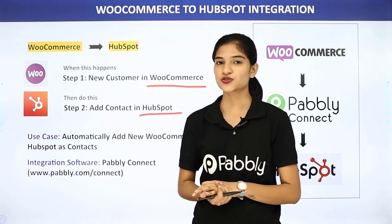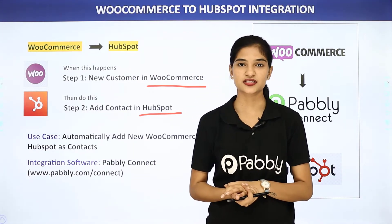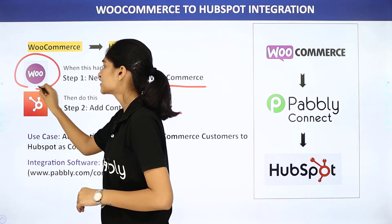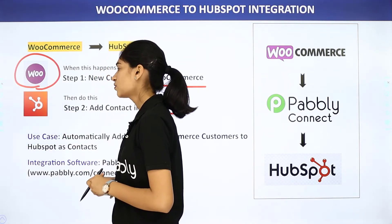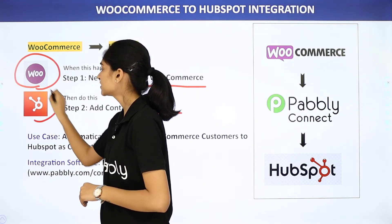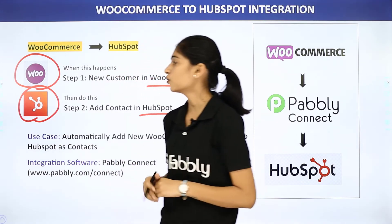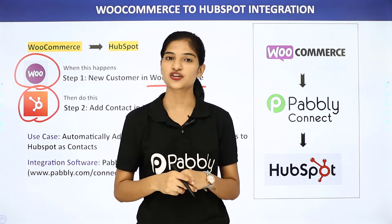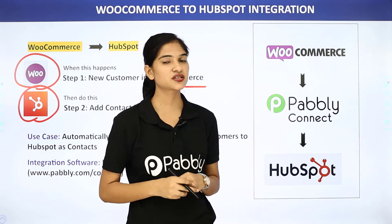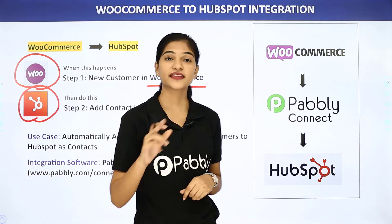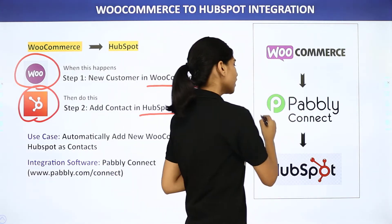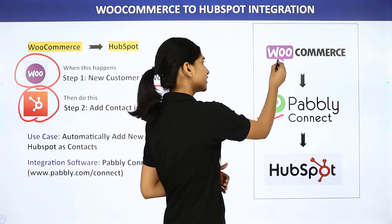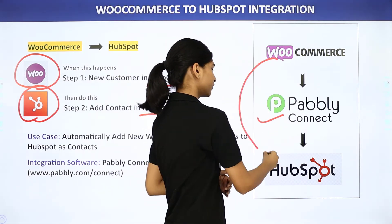First, let us know what these two software applications are all about. WooCommerce is a software application where you can set up your online store, whereas HubSpot is a marketing and sales software. Although WooCommerce and HubSpot have some native integration between them, this integration has certain limitations, and that is why we are going to use Pabbly Connect, a third-party application, to integrate both these software applications.